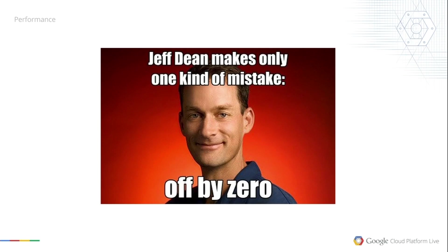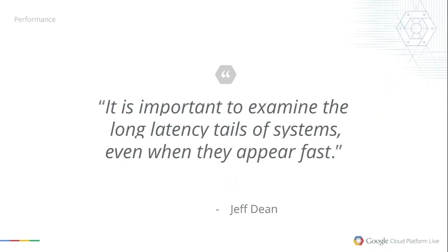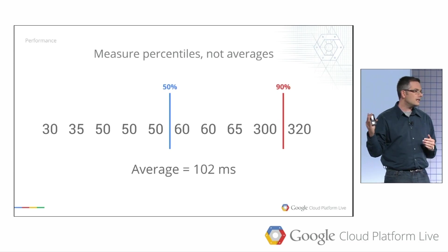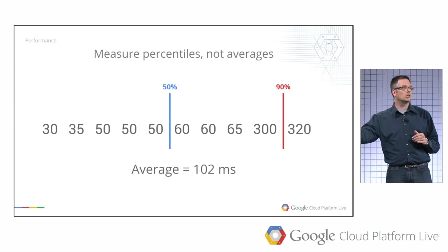Jeff Dean is a senior fellow at Google who wrote many internal systems — BigTable, MapReduce — and is now working on Google Brain. He has a quote we like to use internally: it's important to examine the long tail latency of systems even when they appear fast. What Jeff is talking about is using percentiles rather than averages. Looking at our latency measurements, the average is around 102 milliseconds. But the 90th percentile — meaning 90% of requests have this latency or faster — is way up in the 300 millisecond range, which isn't really appropriate for this site.